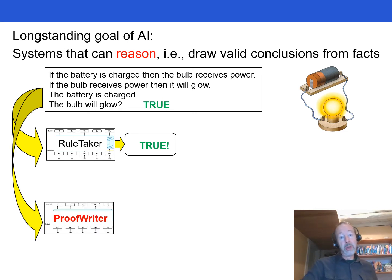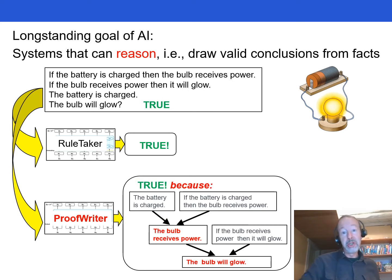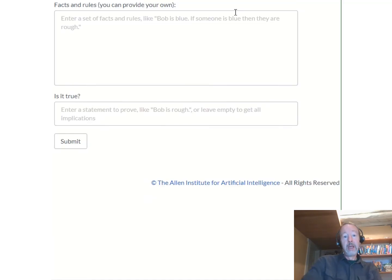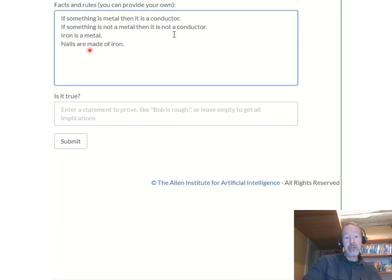In this new work, we ask whether transformers can also be trained to reliably generate the proofs for their conclusions. It turns out transformers can be trained to generate proofs and I'll briefly demonstrate that here.